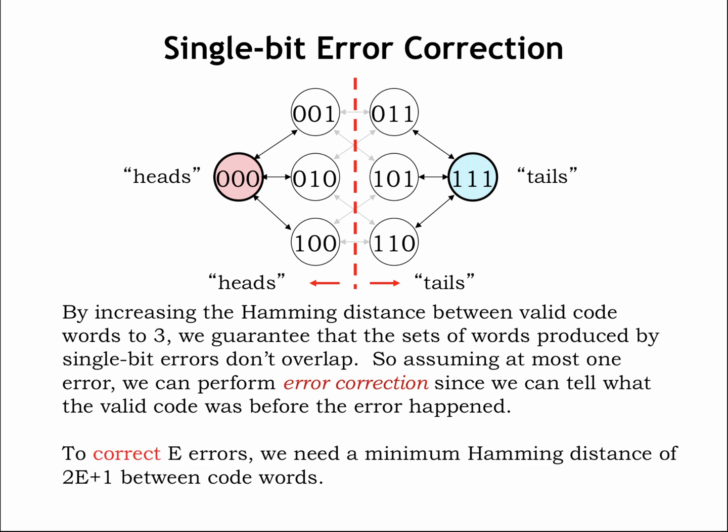Again, we can generalize this insight. If we want to correct up to E errors, the minimum Hamming distance between valid codewords must be at least 2E plus 1. For example, to correct single-bit errors, we need valid codewords with a minimum Hamming distance of 3.